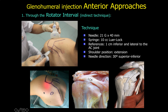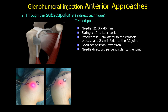Through the rotator interval approach, the glenohumeral joint is almost always in line with the AC joint as seen arthroscopically. Anatomical references are one centimeter inferior and one centimeter lateral to the AC joint, with the shoulder in extension and the needle angled approximately 30 degrees oblique in a superior-to-inferior direction.